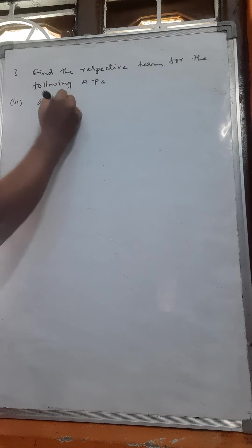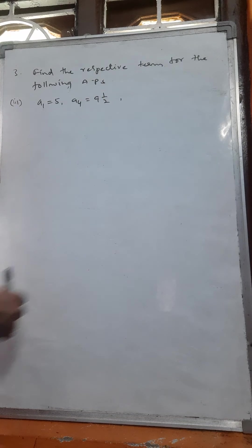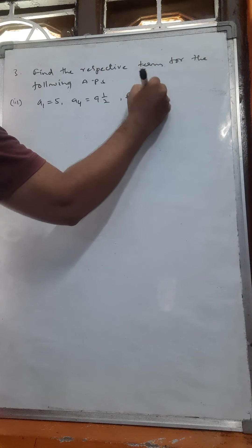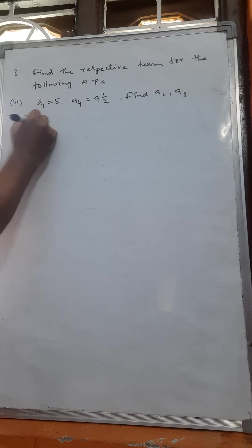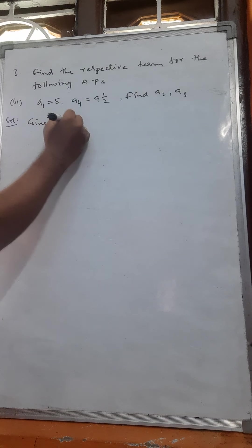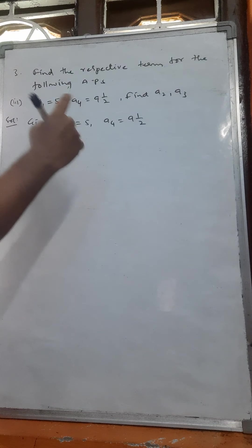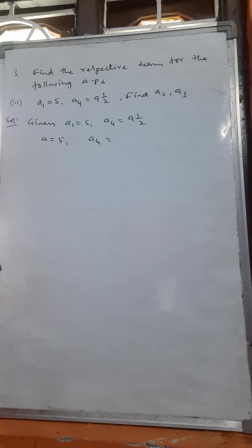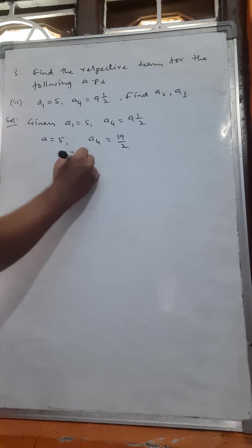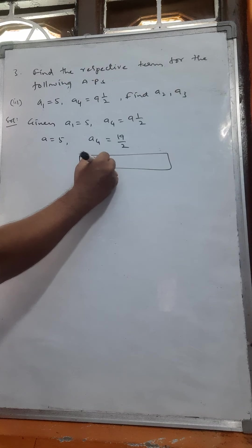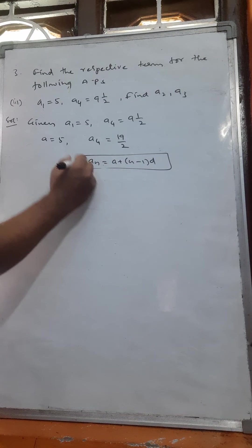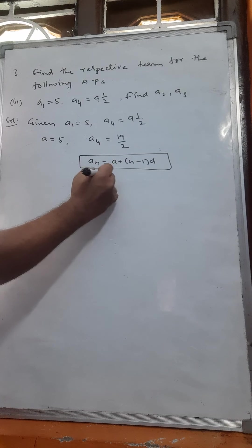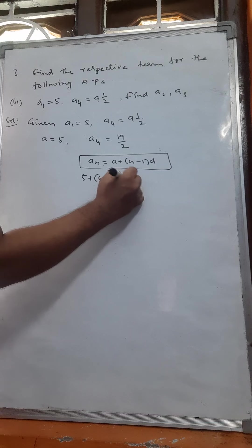Third problem: a1 is equal to 5, a4 is equal to 19 by 2. Find a2 and a3. Given a1 is equal to 5, so a is equal to 5. Using the nth term formula, a4 equals a plus 4 minus 1 into d. So 5 plus 3d is equal to 19 by 2. 3d is equal to 19 by 2 minus 5. LCM is 2, giving 19 minus 10, so 3d equals 9 by 2, and d equals 3 by 2.